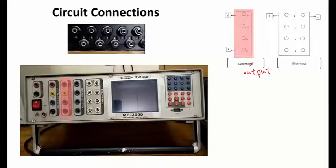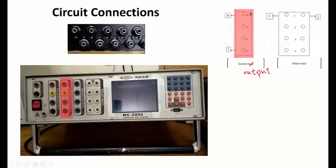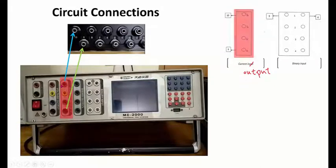Using the circuit connections given in the sheets, we will be connecting the ME 2000 testing system with the relay under consideration. The relay we are testing does not require any DC supply for its operation — it draws current from the current flowing through the relay. We will therefore connect using only two panels: the current output, and binary input to sense the relay's trip signal. Since I is connected to terminal 10 and I_N to terminal 9, we connect those two terminals accordingly.